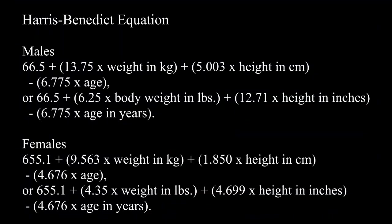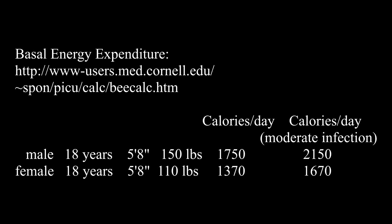This is the Harris-Benedict equation. In the year 1919, they published their report, A Biometric Study of Basal Metabolism in Man. They measured the age, height, weight, and basal metabolic rate of a large number of persons and then fit the data with this equation. Here is the equation for males or females given in the US or the metric systems. For example, here is the calories needed per day by a male and female, 18 years old, 5 foot 8 inches, 150 or 110 pounds. Males use 1750 calories per day while females use 1370 calories per day. With a moderate infection, males need 2150 calories and females 1670 calories per day.